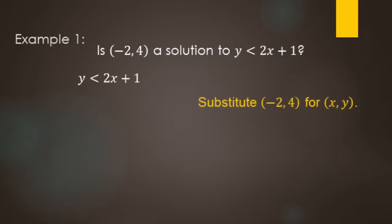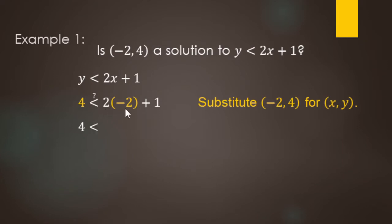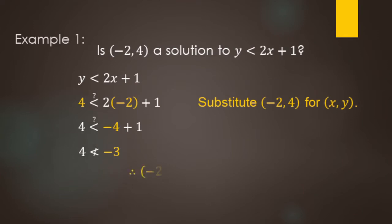To do that, we put negative 2 in for x and 4 in for y. We substitute those values and see if it makes a true statement. So 4 in for y and negative 2 in for x. Using order of operations: 2 times negative 2 is negative 4, and negative 4 plus 1 is negative 3. In this case, 4 is not less than negative 3, so this makes a false statement. Negative 2, 4 is not a solution.